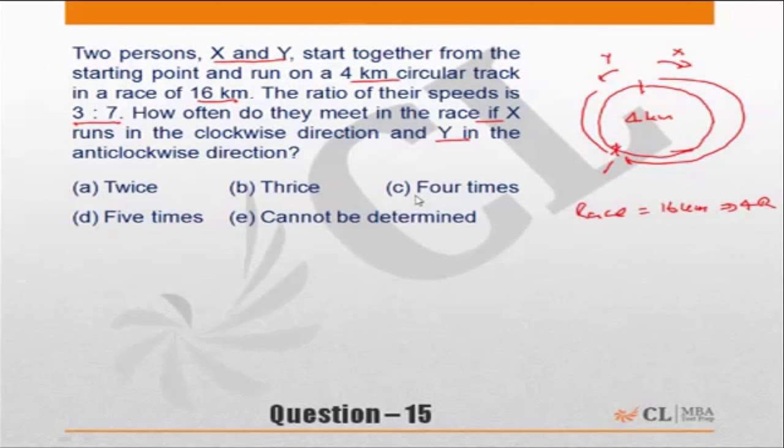So effectively the question becomes: when the faster person Y—because X to Y the speeds are 3 to 7, so that means Y is the faster person—the question effectively boils down to when the faster person Y